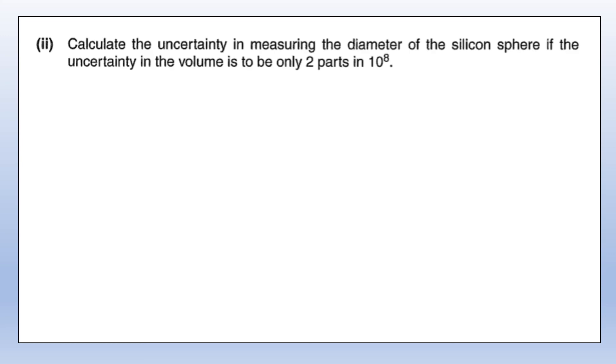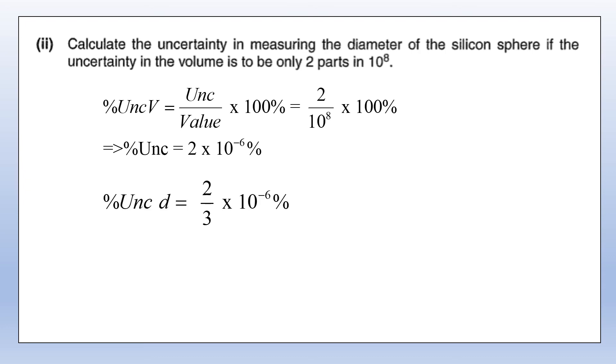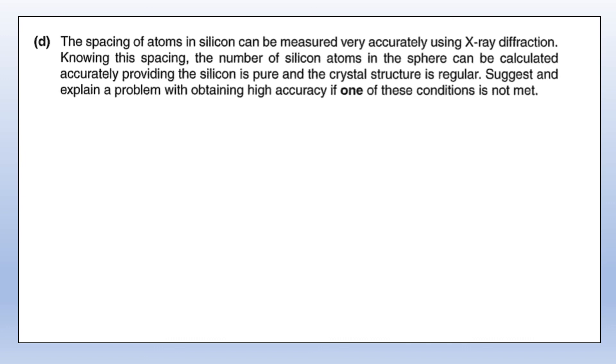Calculate the uncertainty in measuring the diameter of the silicon sphere if the uncertainty in the volume is to be only two parts in 10⁸. First I'm going to figure out what the percentage uncertainty in the volume is. Two parts in 10⁸ expressed as a percentage uncertainty is 2 × 10⁻⁶. Volume is proportional to the diameter cubed, so the percentage uncertainty in the diameter is going to be 2/3 × 10⁻⁶. Expressing the uncertainty in the same way we did for the volume, that means it's 0.67 parts in 10⁸, essentially one third of what it was before in volume.